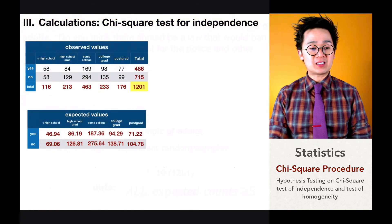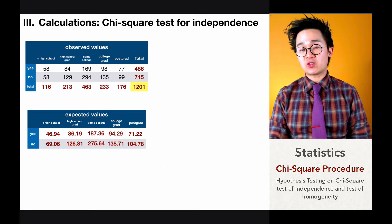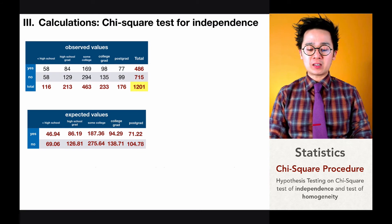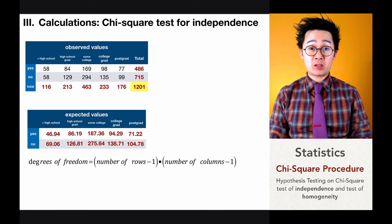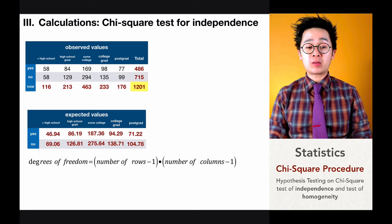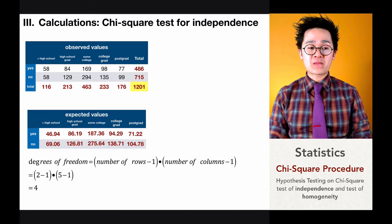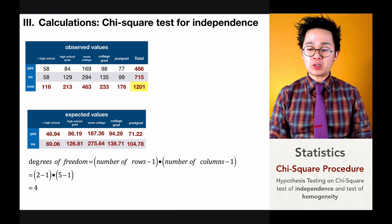We have our observed and expected values. Sometimes we're asked to find the degrees of freedom manually. The formula is: (number of rows minus one) times (number of columns minus one). We have two rows and five columns, so degrees of freedom equals (2 − 1) × (5 − 1) = 1 × 4 = 4.